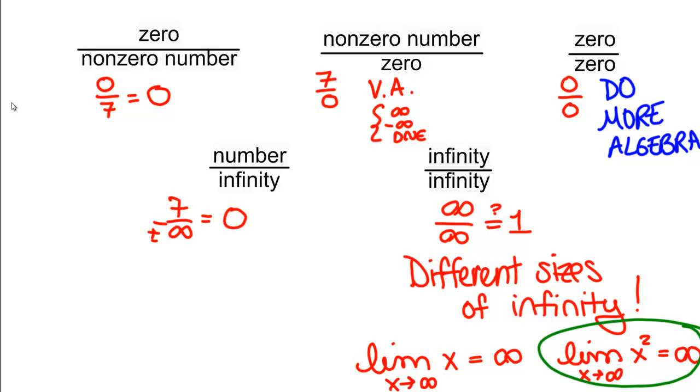So the moral of the story here is that infinity over infinity is also an indeterminate form. And just like 0 over 0, infinity over infinity is going to require you to do more algebra.